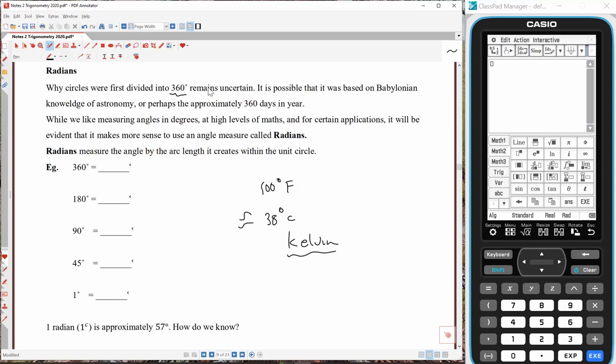Why circles were divided into 360 degrees remains uncertain. Have you ever wondered that? Well, why is it 360? Why isn't it 100? 100 degrees in a circle, and then a quarter circle would be 25.